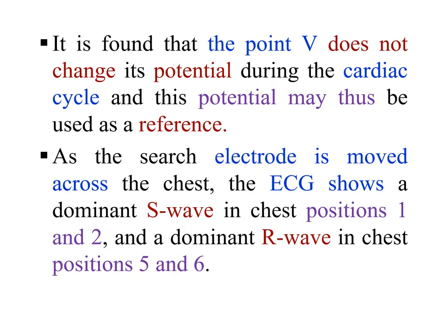It is found that the point V does not change its potential during the cardiac cycle, and this potential may thus be used as a reference. As the search electrode is moved across the chest, the ECG shows a dominant S wave in chest positions 1 and 2, and a dominant R wave in chest positions 5 and 6.